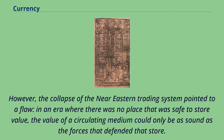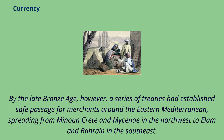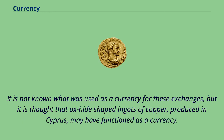However, the collapse of the Near Eastern trading system pointed to a flaw: in an era where there was no place that was safe to store value, the value of a circulating medium could only be as sound as the forces that defended that store. A trade could only reach as far as the credibility of that military. By the Late Bronze Age, a series of treaties had established safe passage for merchants around the eastern Mediterranean, spreading from Minoan Crete and Mycenae in the northwest to Elam and Bahrain in the southeast. It is not known what was used as a currency for these exchanges, but it is thought that oxide-shaped ingots of copper, produced in Cyprus, may have functioned as a currency.